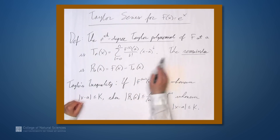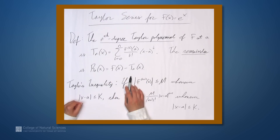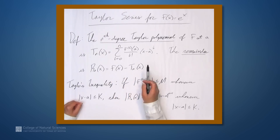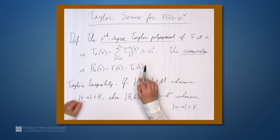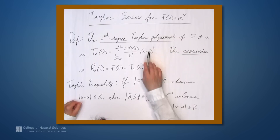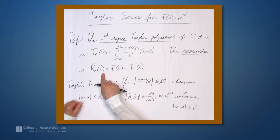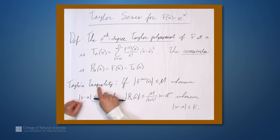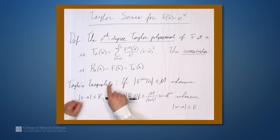The remainder is r sub n, and it's f minus t sub n — f minus the nth Taylor polynomial. We already have a Taylor series for this function. What we really want to show is that this function equals its Taylor series, and to do so we're going to show that this remainder goes to 0 as n goes to infinity. That means the infinite sum of these t sub n's equals f.